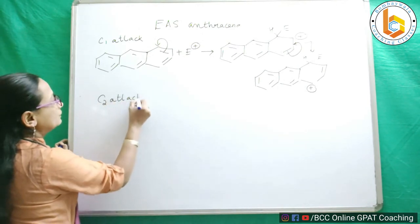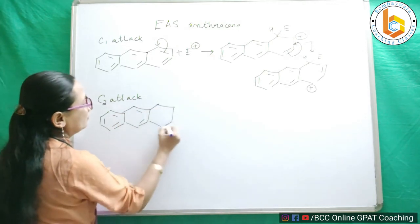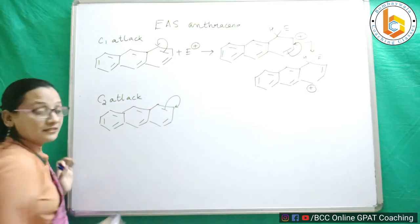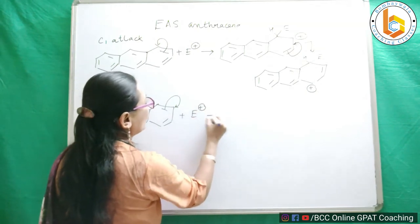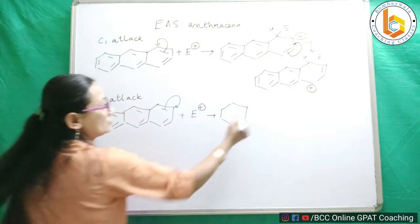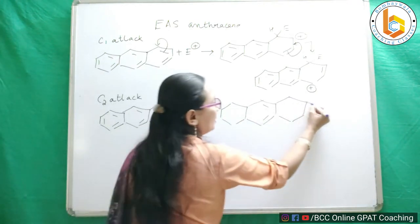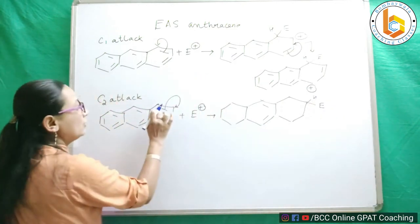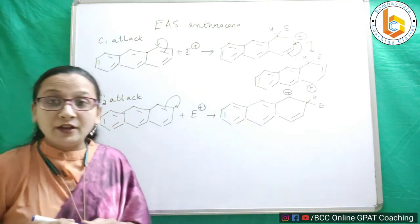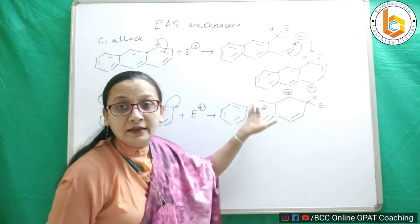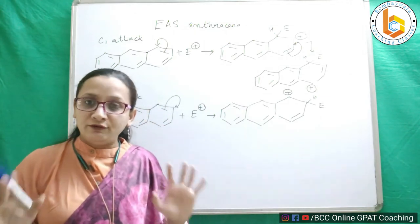Now let us see what happens with attack at carbon number 2. Here is anthracene with its double bonds. I am now making the electron intensity at the second position the major intensity. The electrophile comes and attacks at the second position. At the tail of the double bond a positive charge forms. The resonating forms stop because the adjacent benzene ring remains intact and aloof, as established.